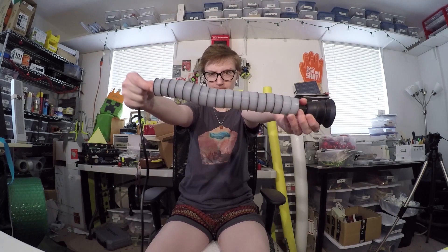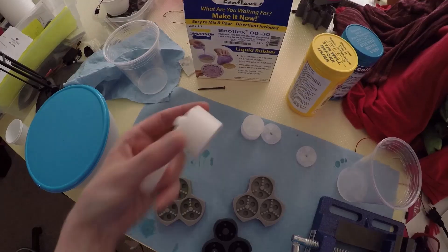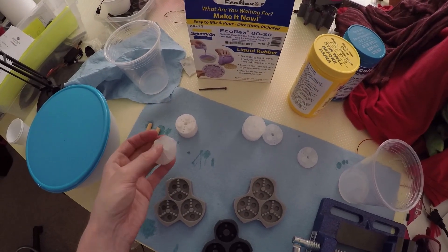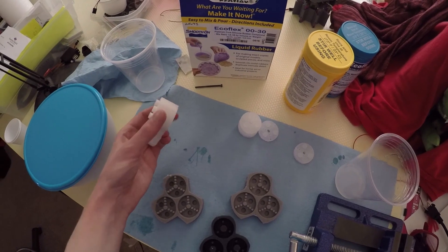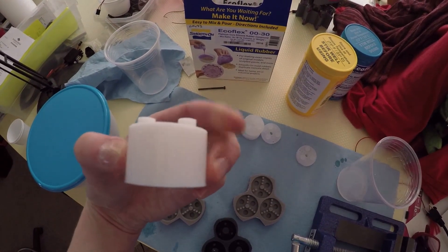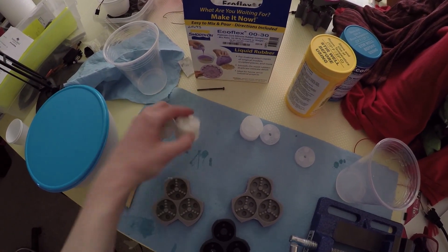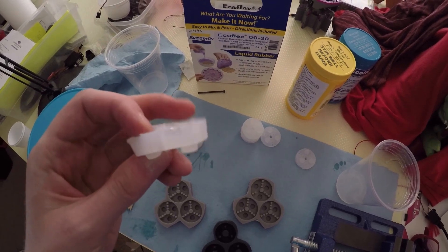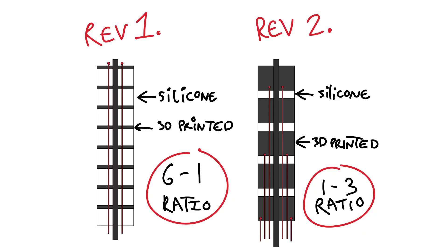And then these super tiny thin wafer discs in between. And somebody pointed out that our spine actually works the exact opposite way. We have big thick bone vertebrae with tiny little pads of squishiness in between. So I changed the proportions to mimic more of a biological spine.